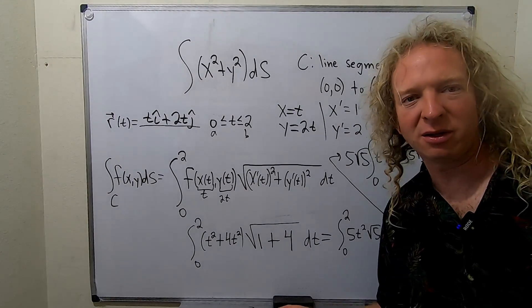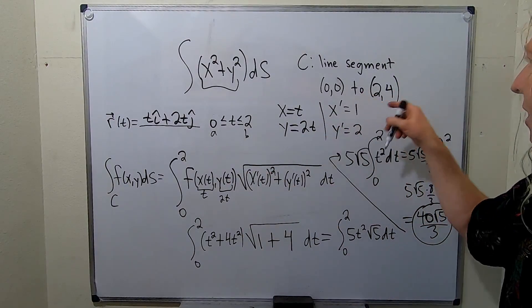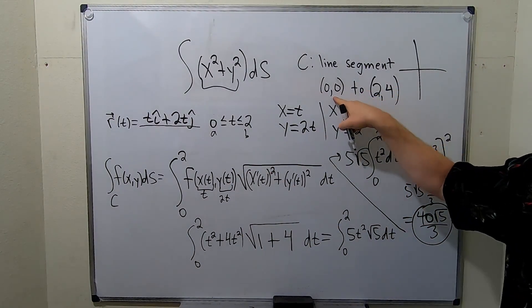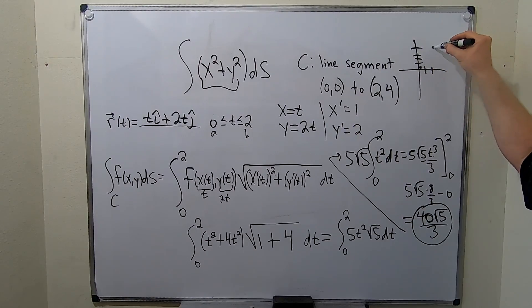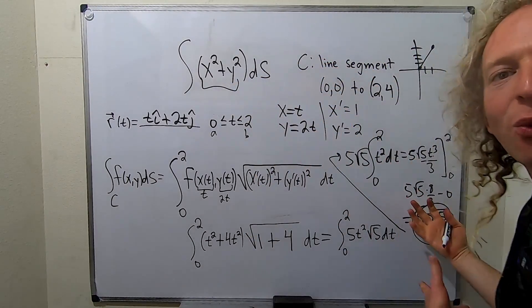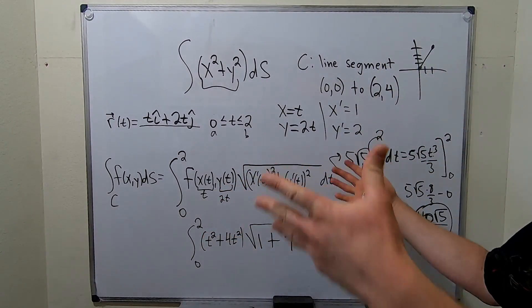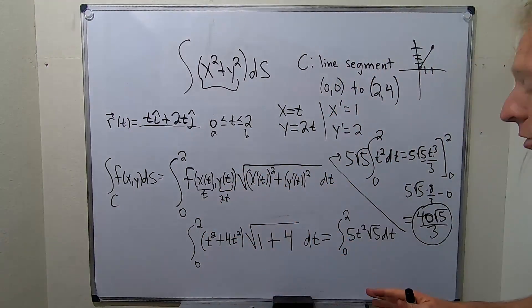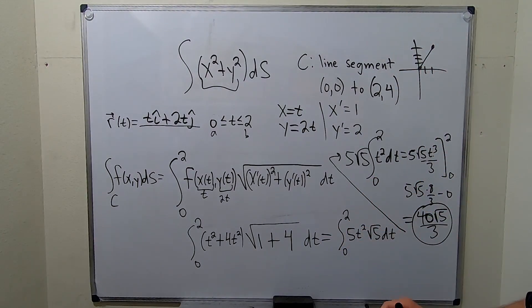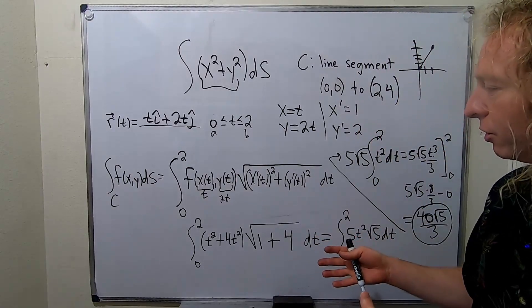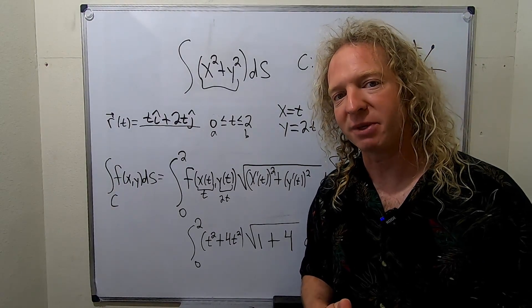What could this represent in the real world? If this was a density function and this was a wire going from 0,0 to 2,4, then this line integral would give you the mass of the wire. That would be one example of an application. Line integrals are extremely important in mathematics. This is typically the first formula you learn and probably one of the most important ones. I hope this video has been helpful. Take care.